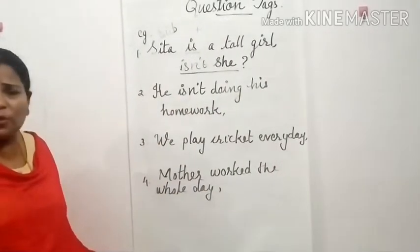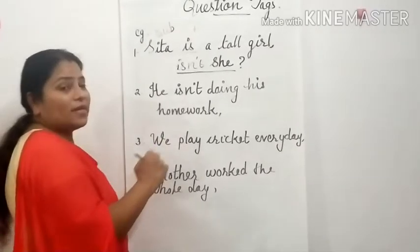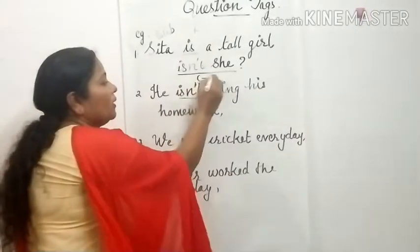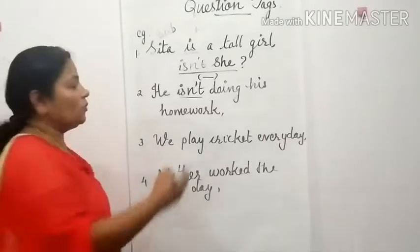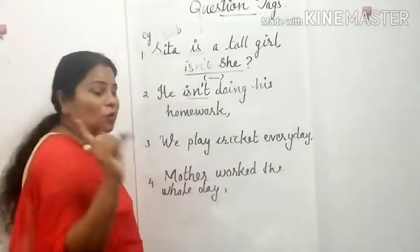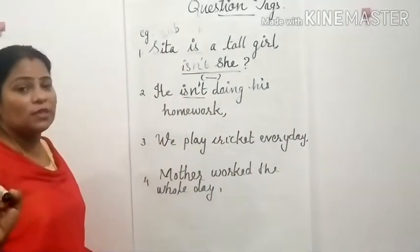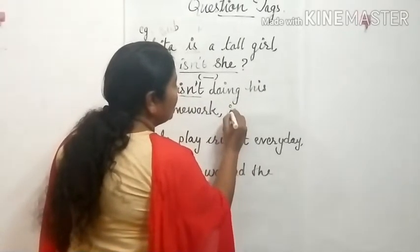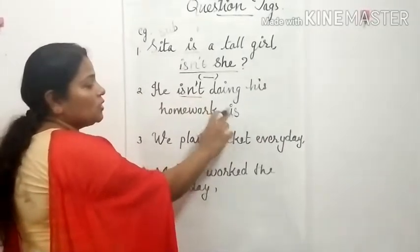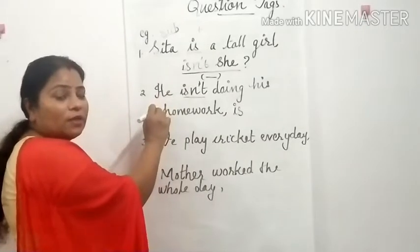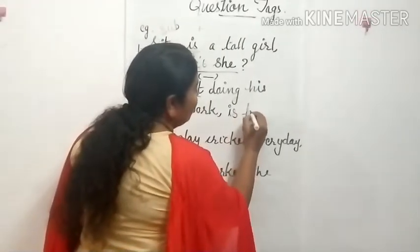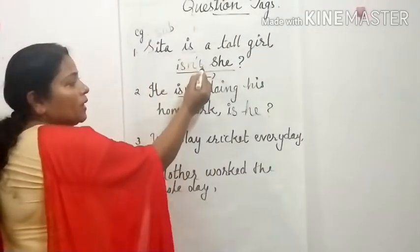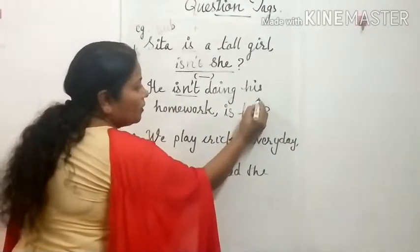Next example: 'He isn't doing his homework.' Is this positive or negative? It is negative, because there is 'isn't' — that is 'not.' So it is a negative statement, and the negative statement should have a positive question tag. The 'be' verb here is 'is,' so the question tag becomes: 'He isn't doing his homework, is he?'